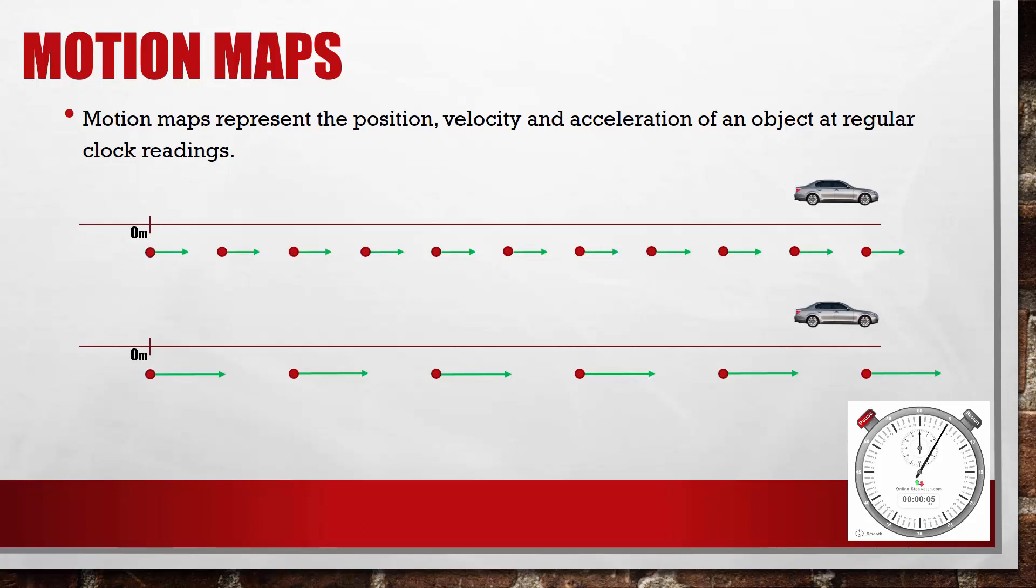If, instead of traveling to the right, the car had been traveling to the left, our motion map would simply look like this.